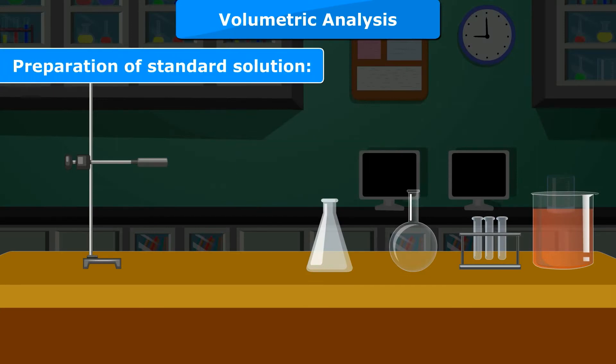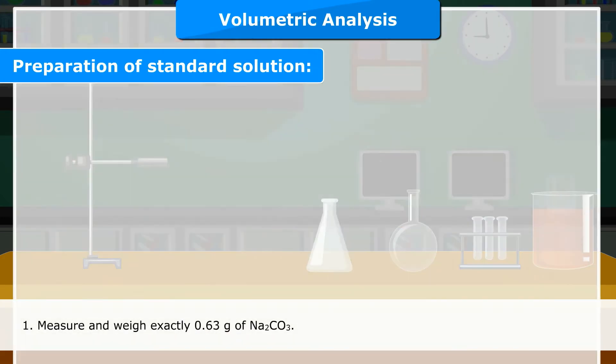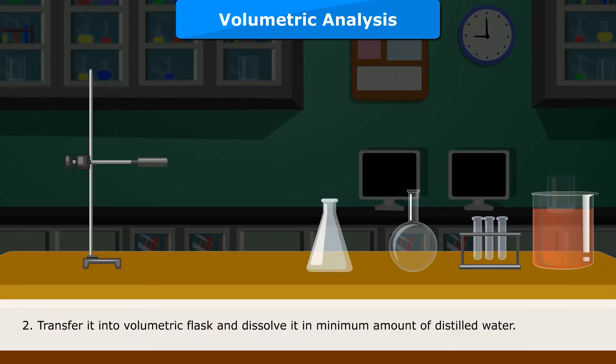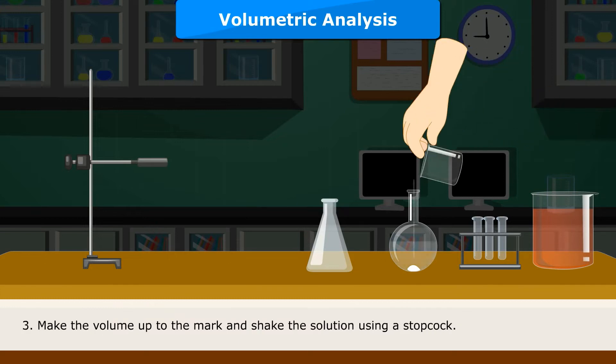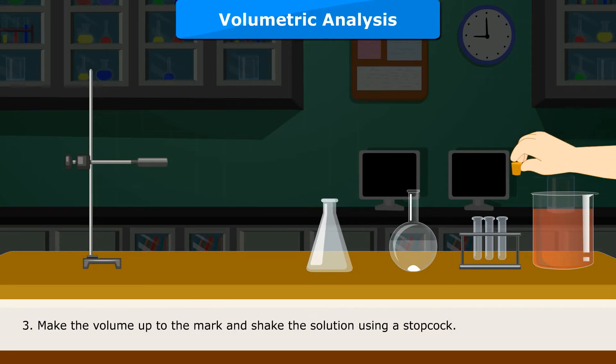Procedure A: Preparation of standard solution. Measure and weigh exactly 0.63 g of Na2CO3. Transfer it into volumetric flask and dissolve it in minimum amount of distilled water. Make the volume up to the mark and shake the solution using a stopcock.